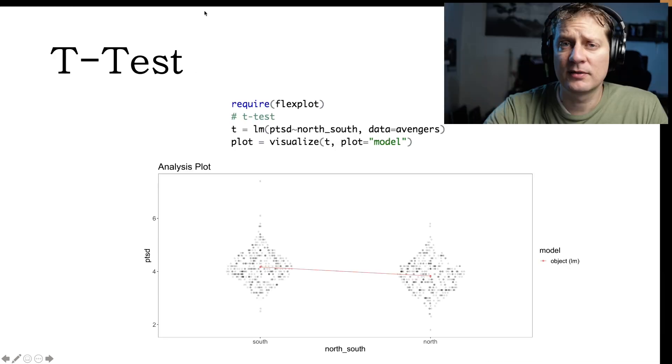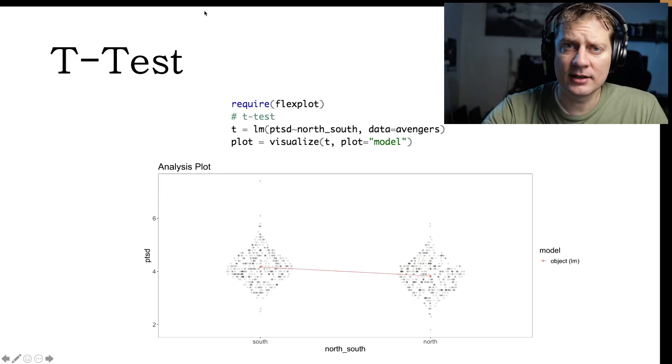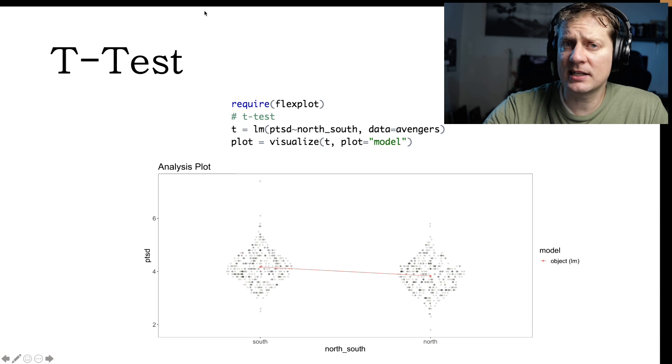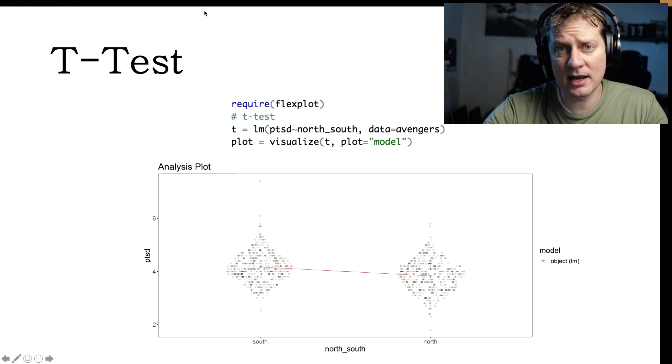Let me give you some examples. For example, a t-test. Here's one example where I have some R code that is modeling a t-test using the Avengers dataset. If we were to visualize that, we would see what's called a beeswarm plot showing a modified scatterplot of the relationship between north and south battlefields and PTSD.